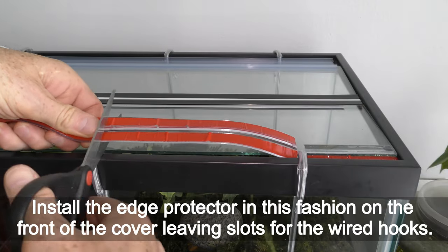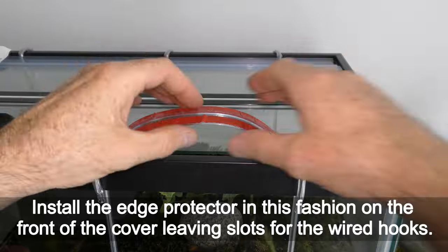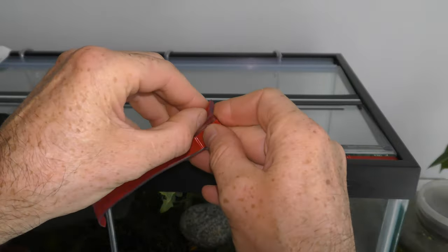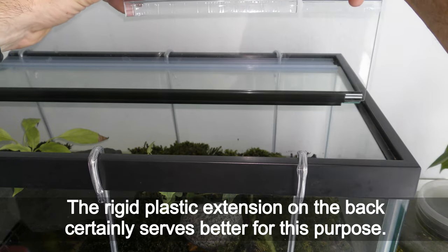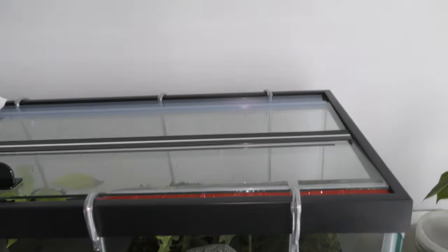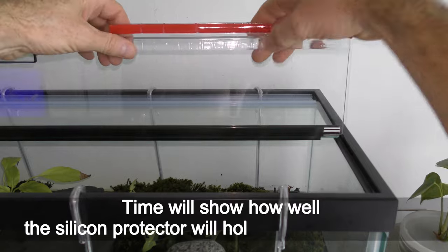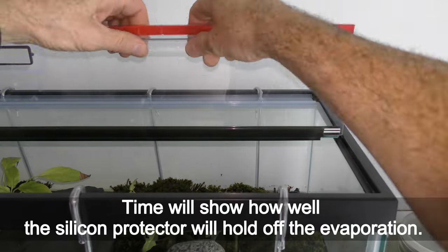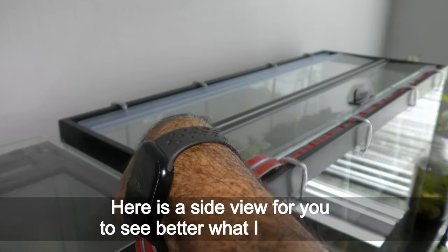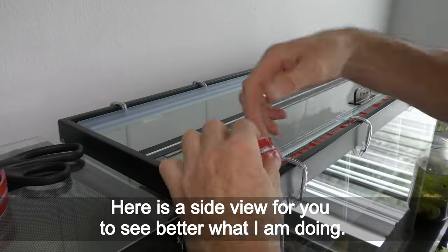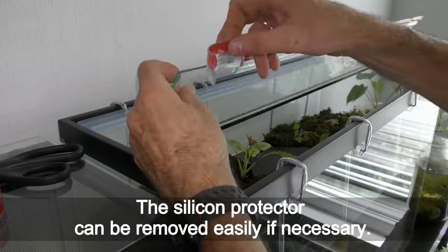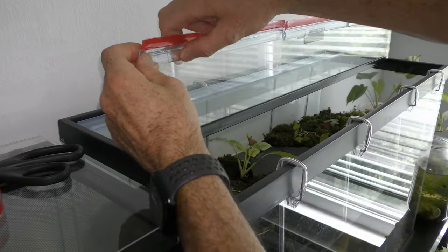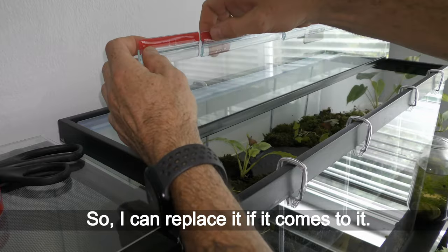Do not remove the protective layer from the overlapping part of the strip. Install the edge protector in this fashion on the front of the cover, leaving slots for the wired hooks. The rigid plastic extension on the back certainly serves better for this purpose. Time will show how well the silicone protector will hold off the evaporation. Here is a side view for you to see better what I am doing. The silicone protector can be removed easily if necessary. So I can replace it if it comes to it.